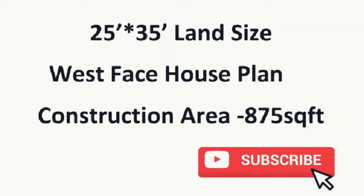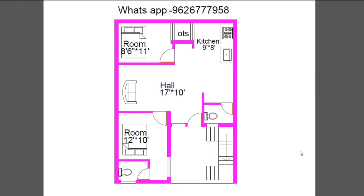Hi friends, welcome to my channel. We are going to talk about a 25x35 vegetable sauce plant. Total construction area is 750 square feet. Total construction cost is 15 lakhs. So let's look at the details of the plan.